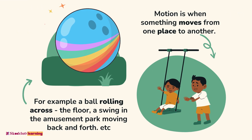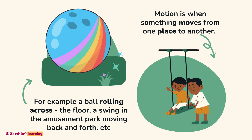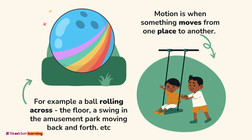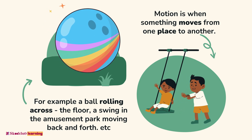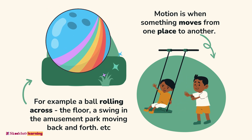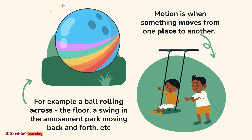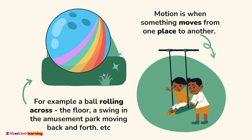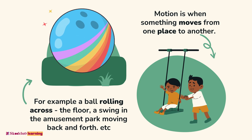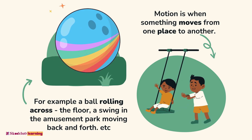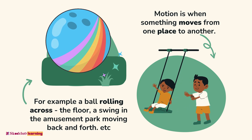Motion is when something moves from one place to another. For example, a ball rolling across the floor, or a swing in the amusement park moving back and forth.